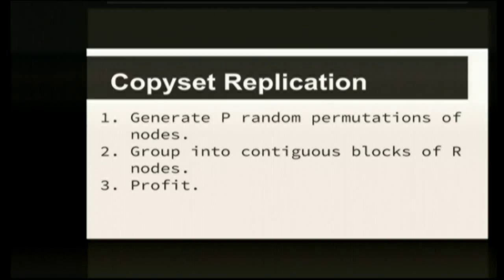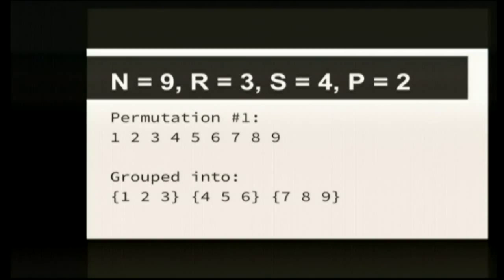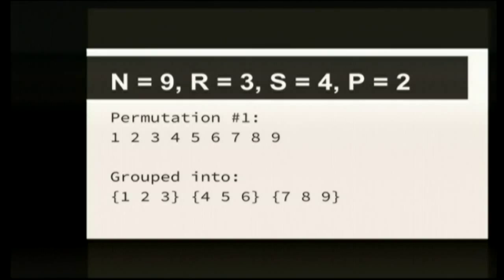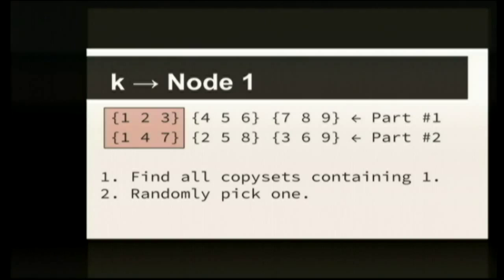How do we actually create these sets? This is called a copy set. The way copy set works: we'll create P random permutations of the nodes, take these permutations and group them into blocks of R nodes. Here's an example: N is nine, R is three, scatter width is four, and P is two. The first permutation is one, two, three, four, five, six, seven, eight, nine — we group those into blocks of size three: sets {1,2,3}, {4,5,6}, and {7,8,9}. The second permutation is one, four, seven, two, five, eight, three, six, nine — we group those as well: {1,4,7}, {2,5,8}, {3,6,9}. In total we have six sets.